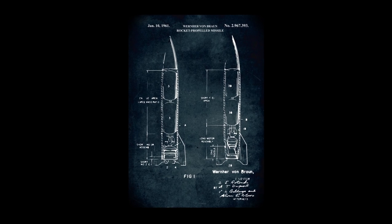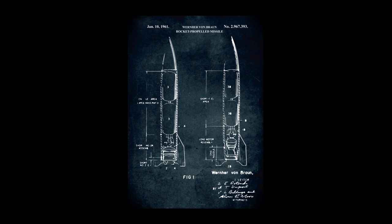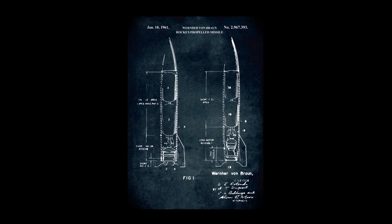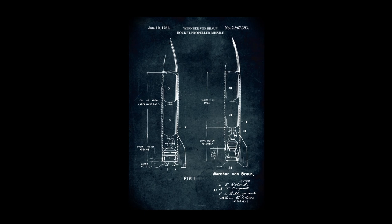it obtains a difference or deviation. The guidance subsystem uses deviation to generate corrective commands to drive the missile from a position where it is to a position where it isn't, and arriving at a position where it wasn't.